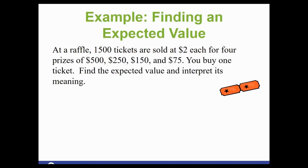So here's our example. At a raffle, 1,500 tickets are sold at $2 each for four prizes of $500, $250, $150, and $75. You buy one ticket, find the expected value, and interpret its meaning. So we need to make our chart. We need to know the mean. We need to know the probability for each. So for our x value, we need to know what we are expecting here. What are we gaining? So if we walked up, bought a ticket, and won the prize of $500, how much do we walk away with?